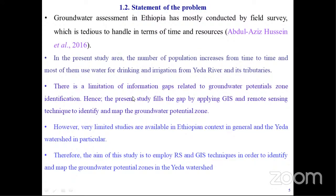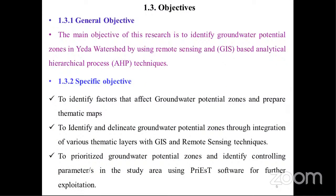Very limited studies are available in the Ethiopian context in general, and the Yeda watershed in particular. Therefore, the aim of this study is to employ remote sensing and GIS techniques to identify and map the groundwater potential zones. The general objective is to identify groundwater potential zones in Yeda watershed using remote sensing and GIS-based analytical hierarchy process. There are three specific objectives: first, to identify factors that affect groundwater potential zones and prepare maps; second, to identify and delineate groundwater potential zones through integration of various map layers with GIS and remote sensing; and third, to prioritize groundwater potential zones and identify controlling parameters.